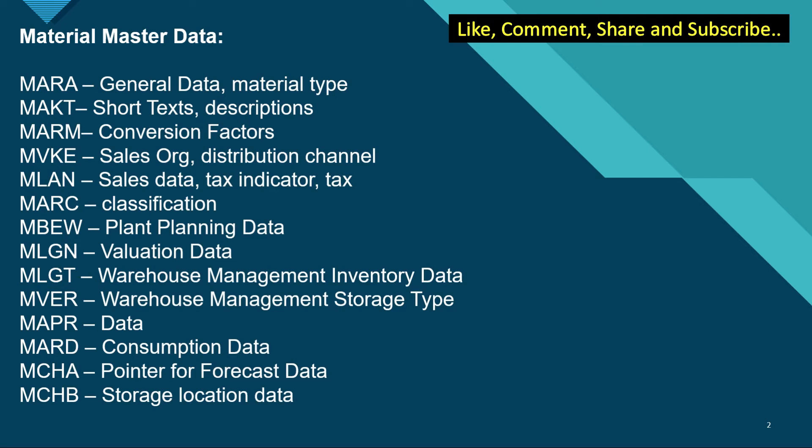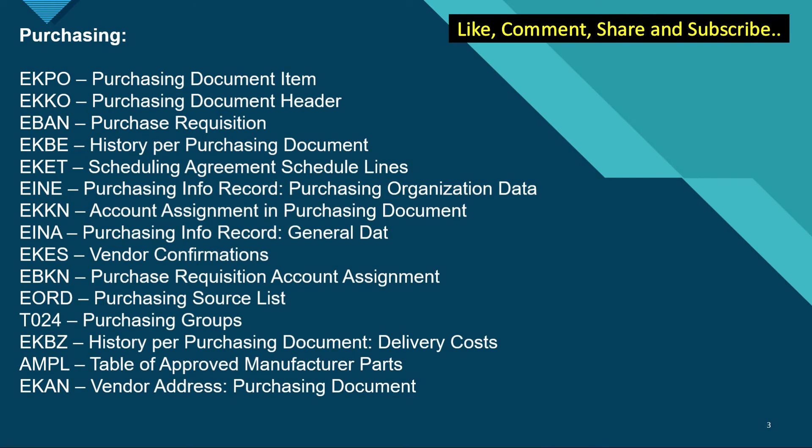MARC has the classification data. MBEW has the plant planning data. MLGN has the valuation data. MLGT has the warehouse management inventory data. MVER has the warehouse management storage type. MARD has the consumption data. MCHA has the pointer for forecast data, and MCHB has the storage location data.